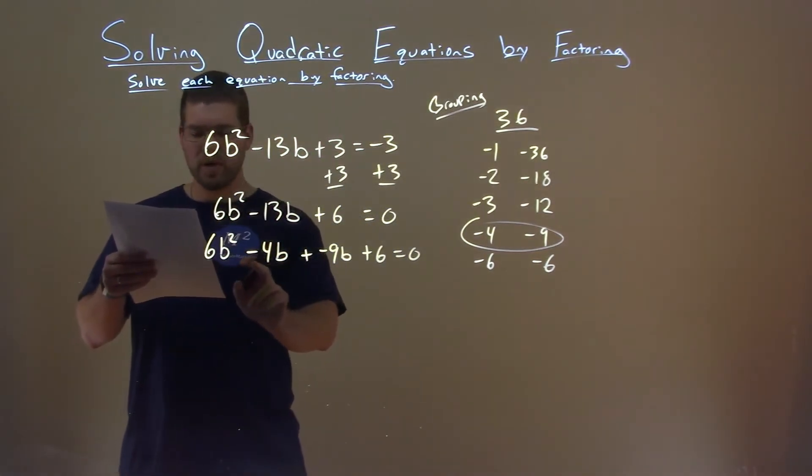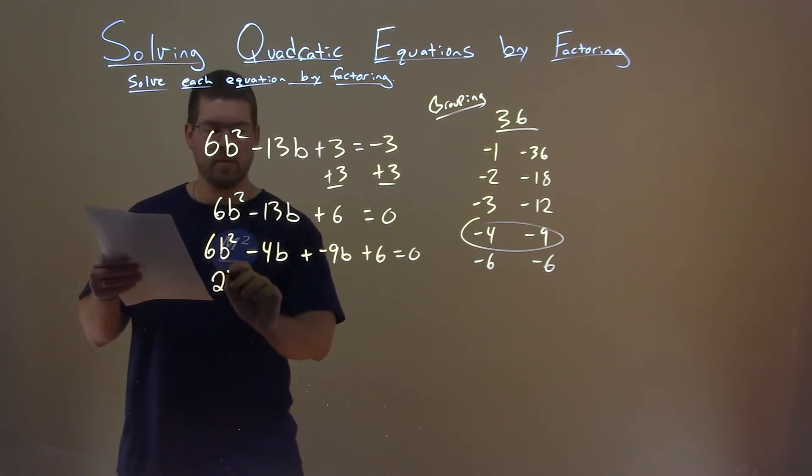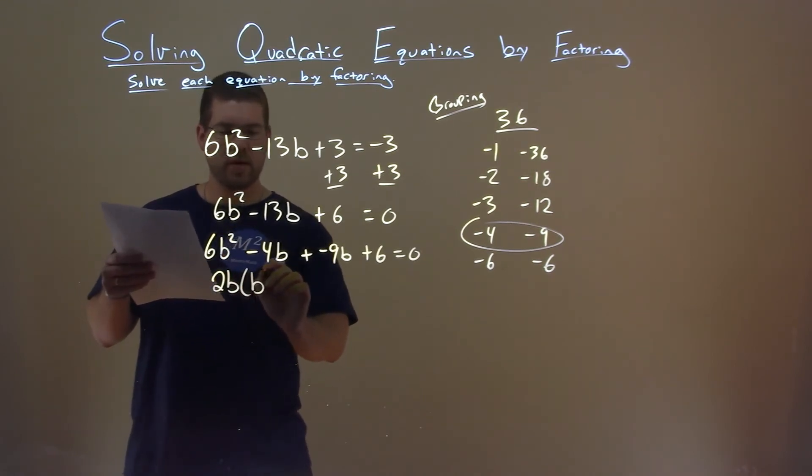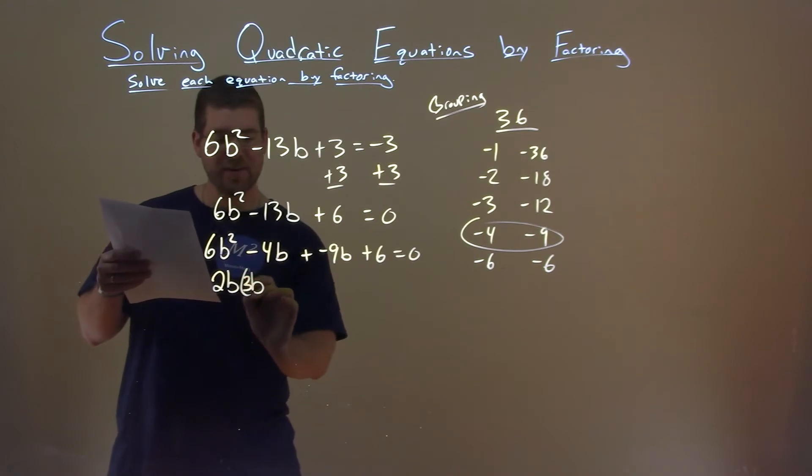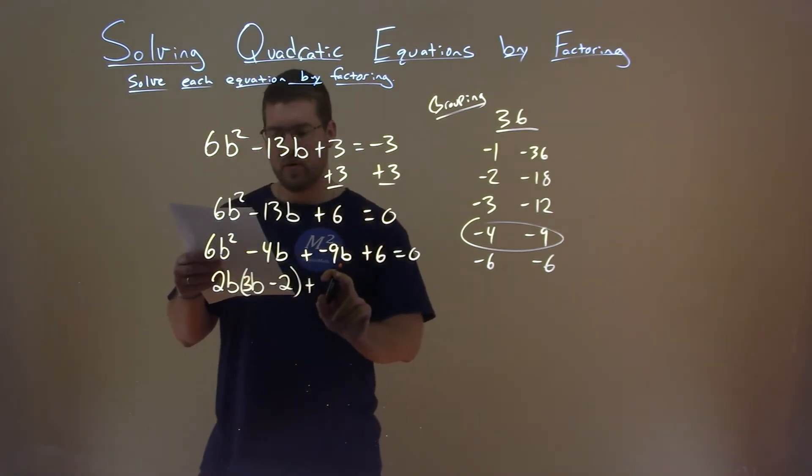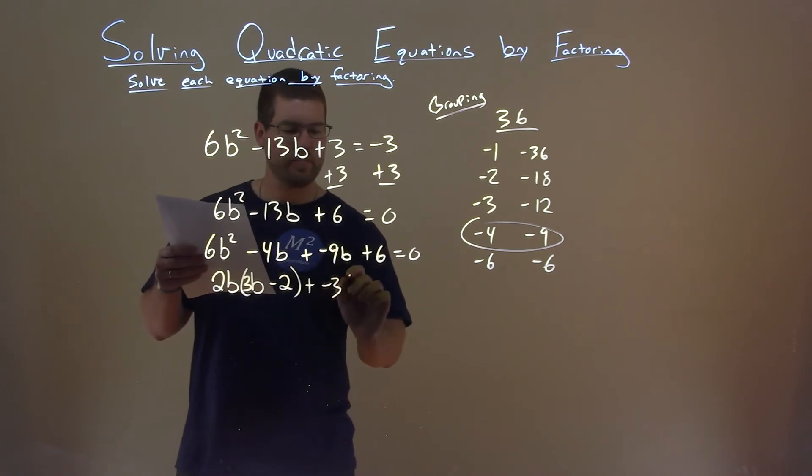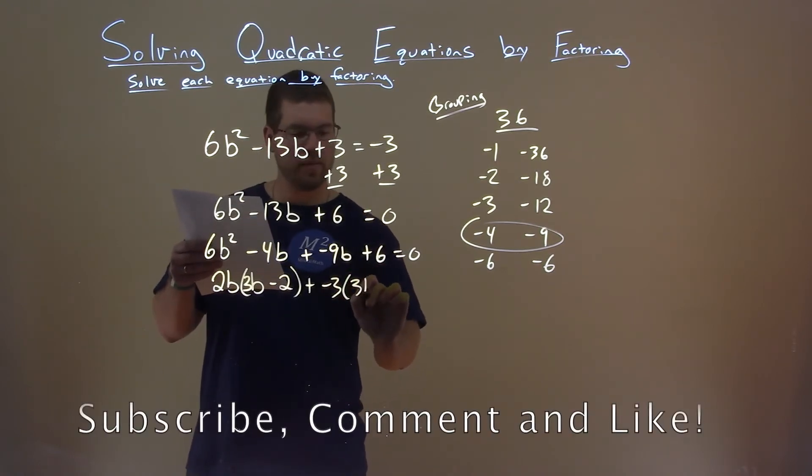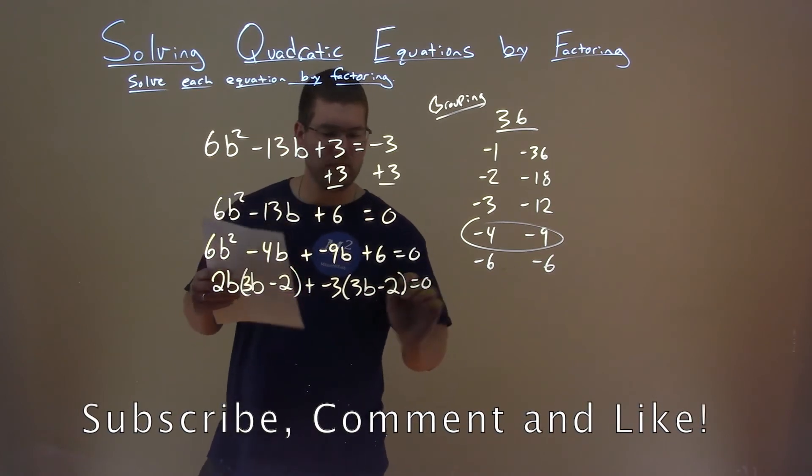Well, now let's pull out a common factor. We can pull out a 2b here, 2b is in 6b squared and 4b. Pull out a 2b, we're left with, that's a 3b, 3b minus 2 here, plus, let's pull out a negative 3 here. We're left with a 3b minus 2 equals 0.